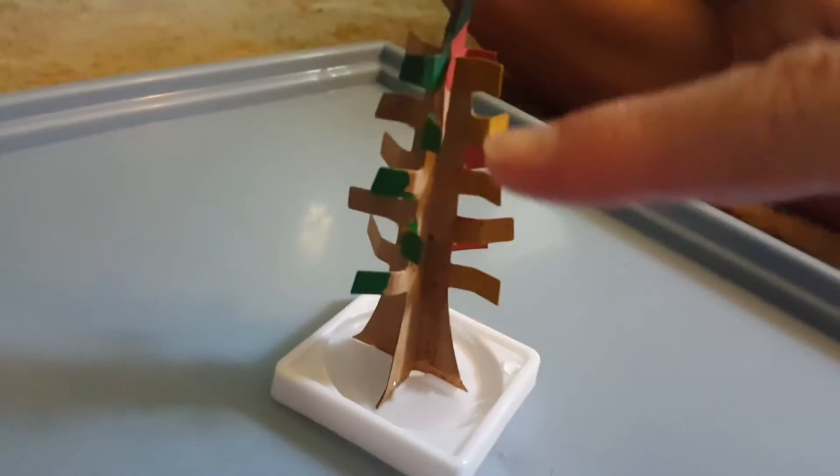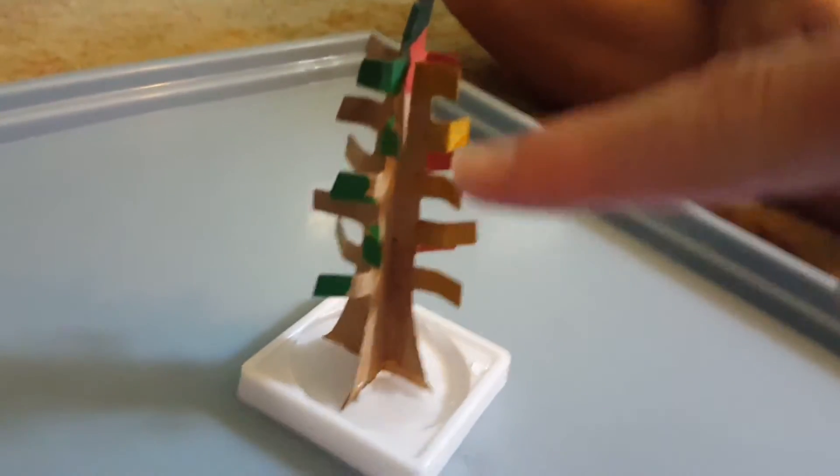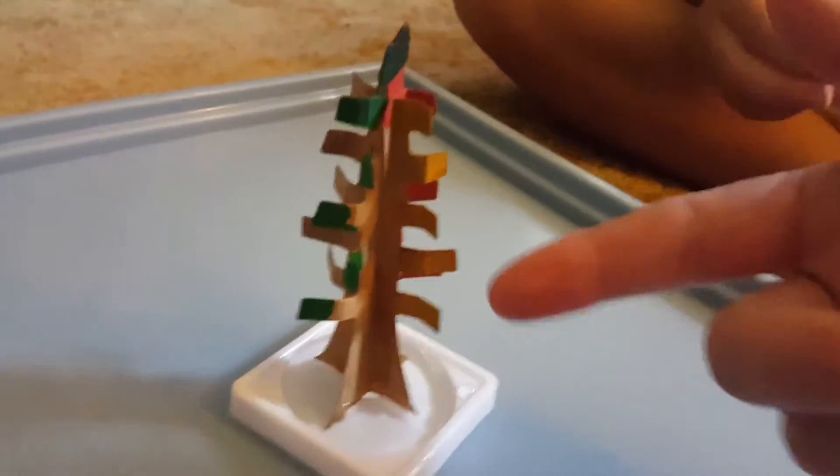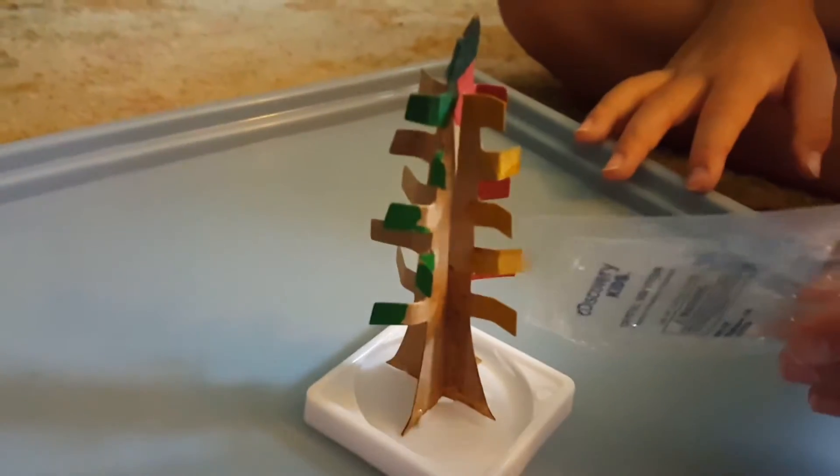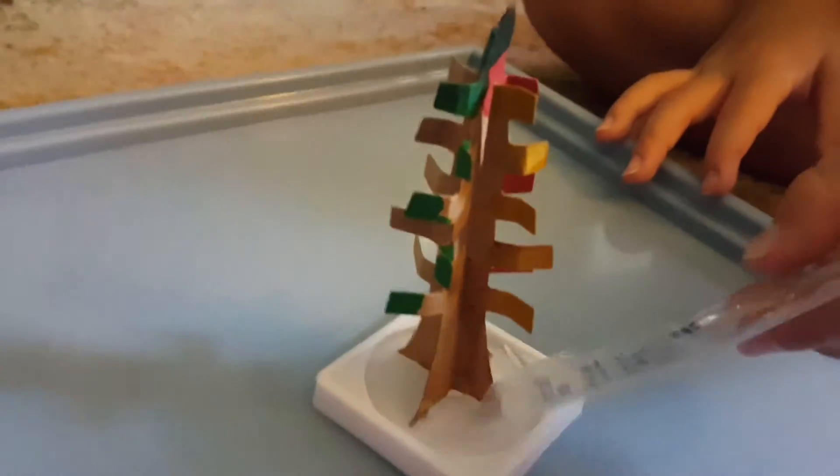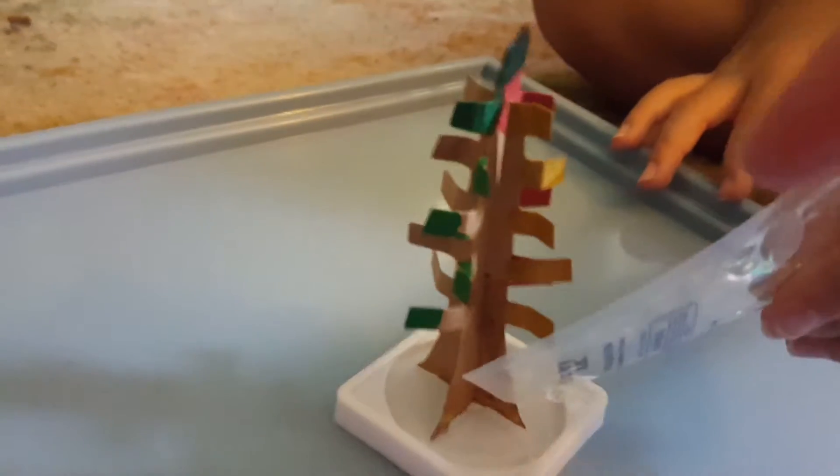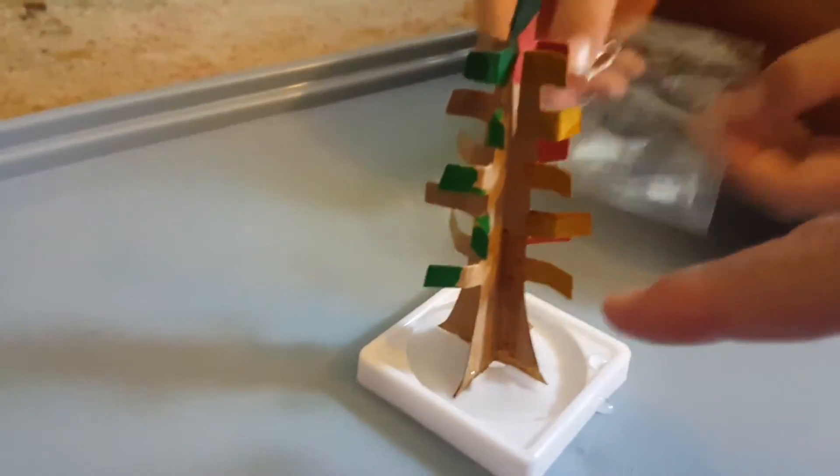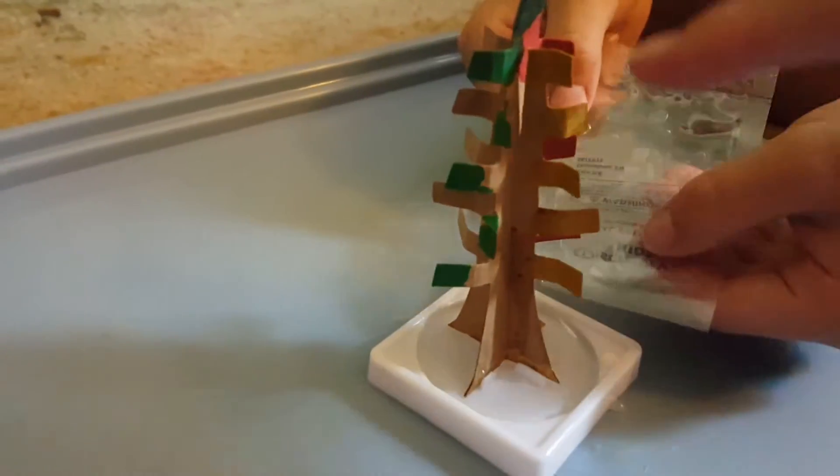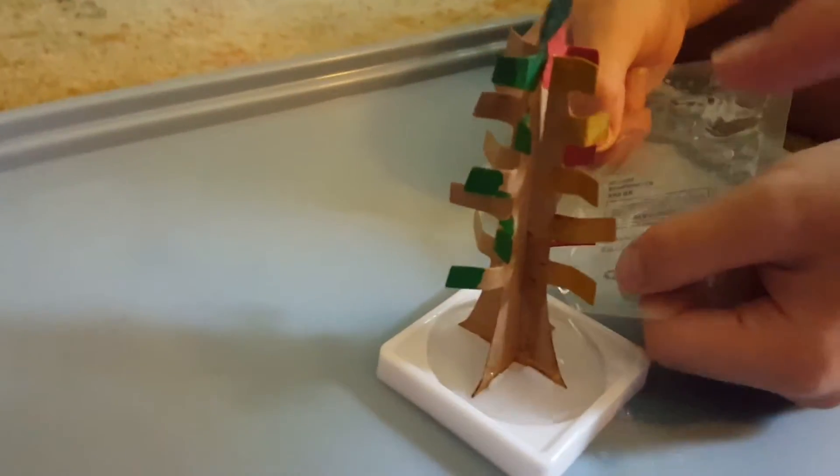As you can see, the tree branches are different colors so that the crystals will be different colors. As the solution moves up through the capillaries of the cardboard, which is the little... There's a little bit more of the solution in there. It's crystal solution. And as it moves up the little pores of the cardboard, it's going to go into these colored bits of cardboard and change the crystals to different colors.